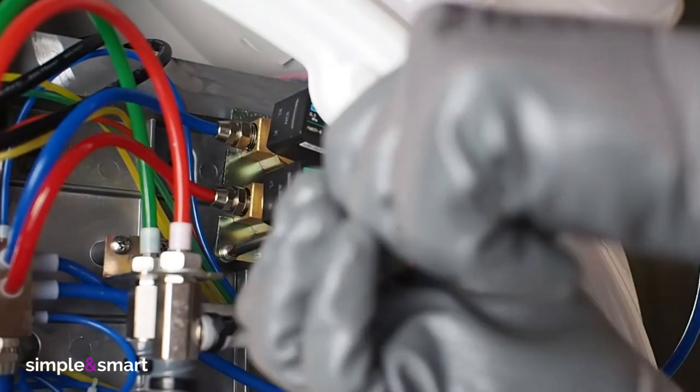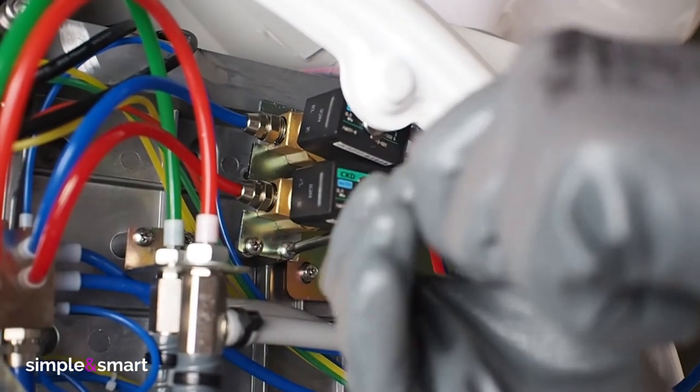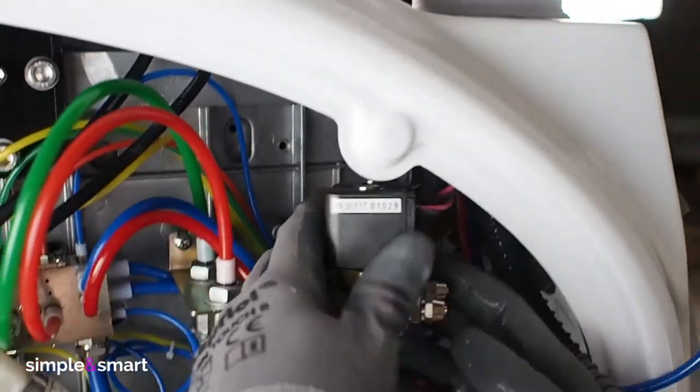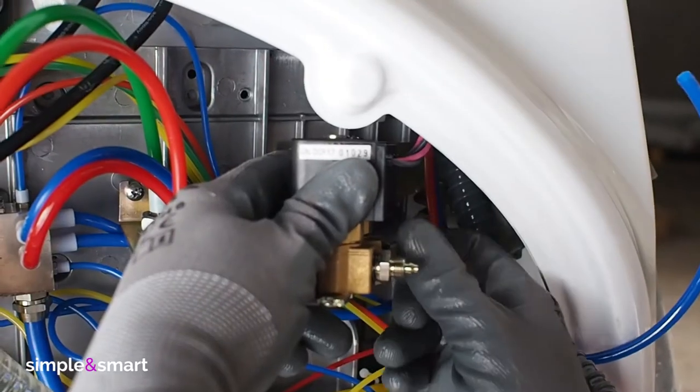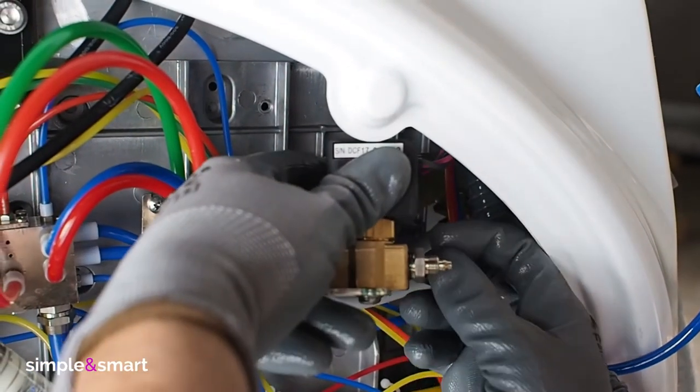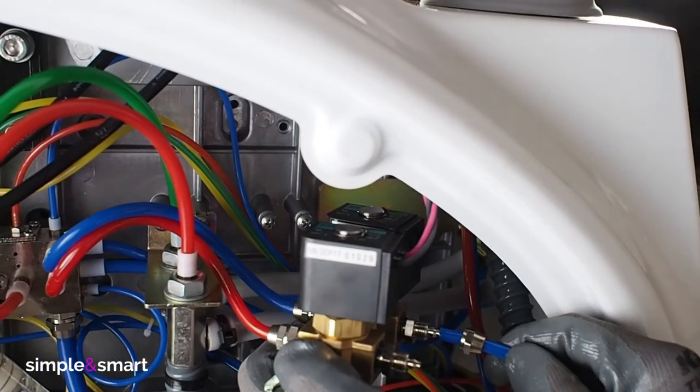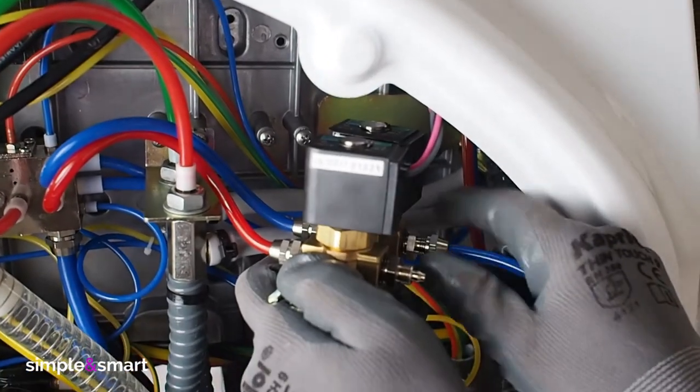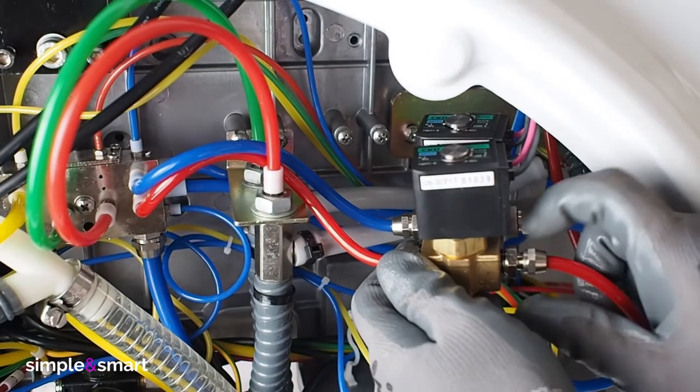If you remove the solenoid valves holder, you can easily place the red and blue tubes of the spit-on in its place. Just note the blue goes with blue and red with red. Close the tube rings and place back the solenoid valve in its position.